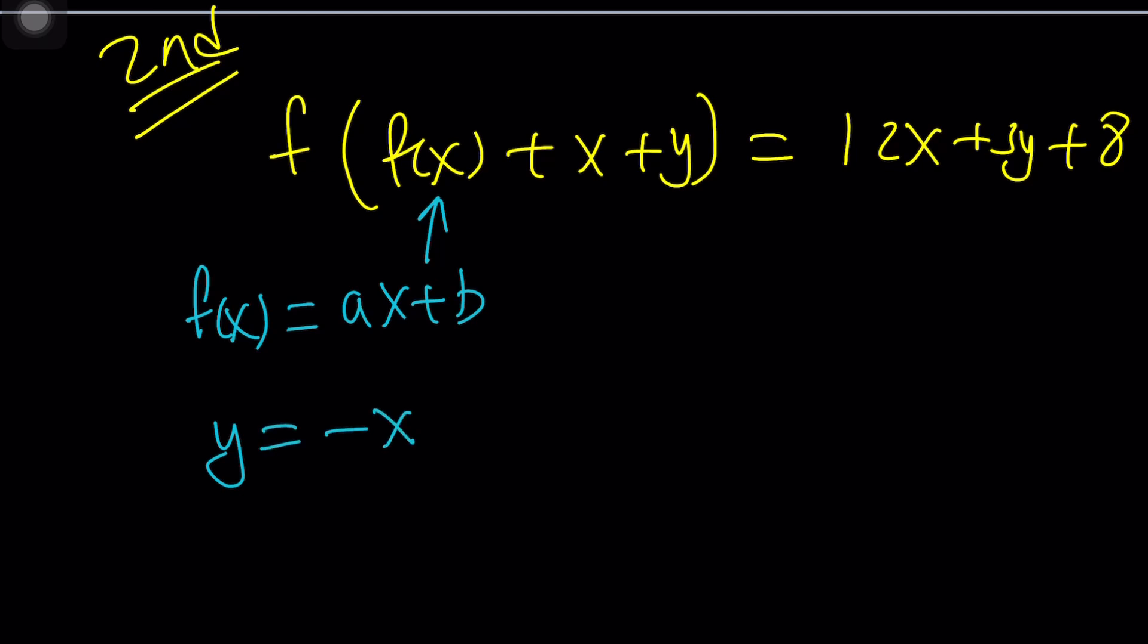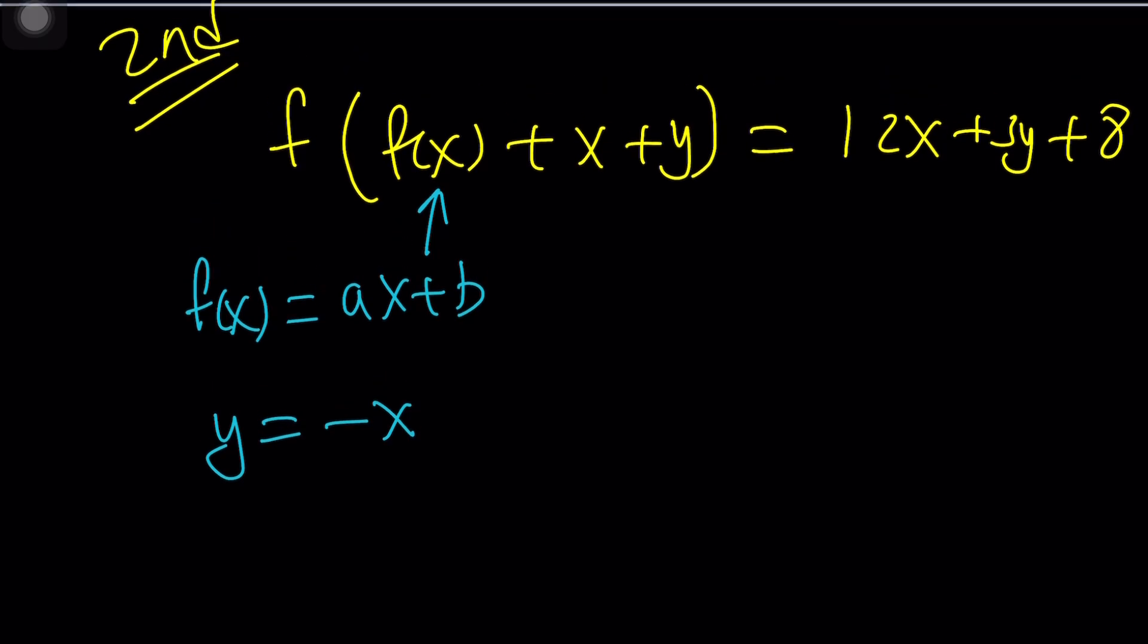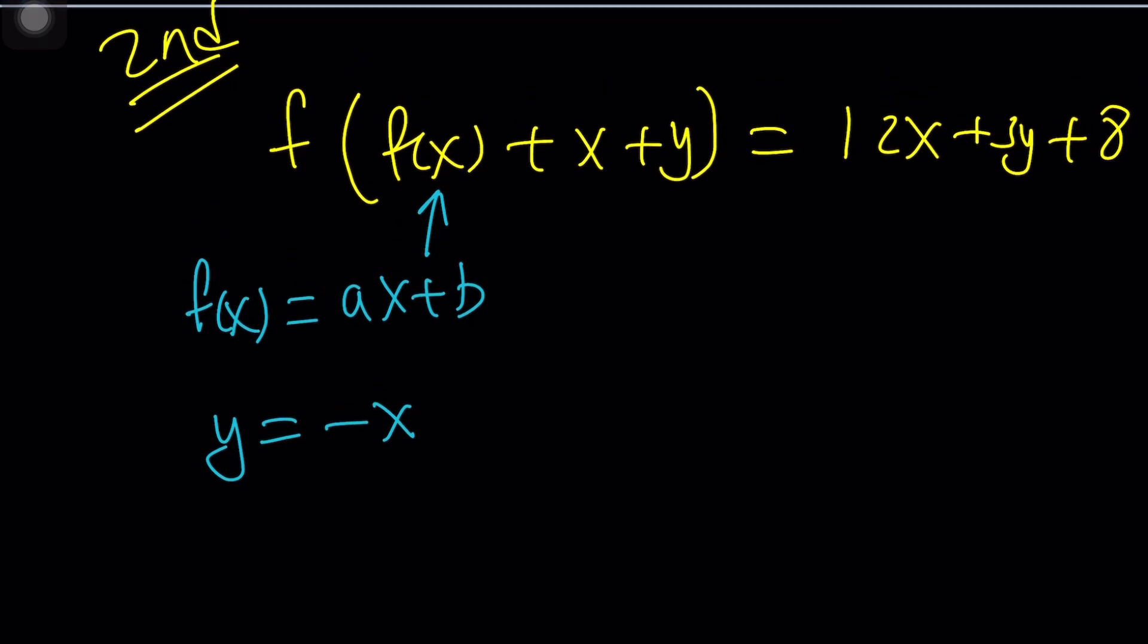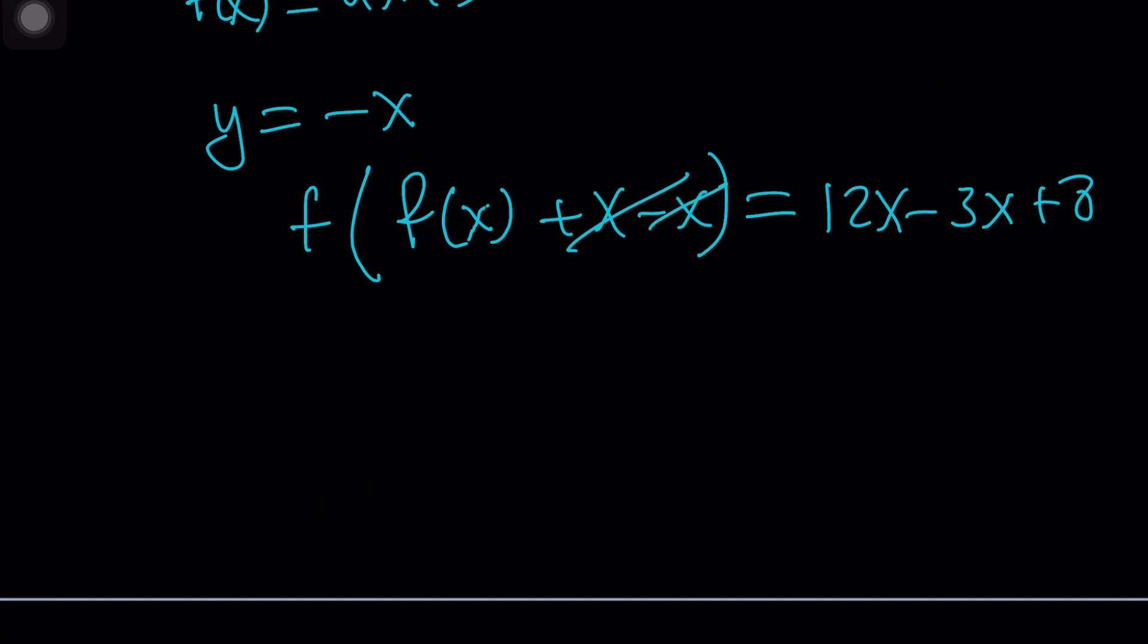We could try to replace y with negative x. I think that will help a little bit. If you do that, you're going to get, on the left-hand side, f of f of x, x is not going to change, plus x minus x, and on the right-hand side, 12x minus 3x plus 8. Let's see where this leads us.